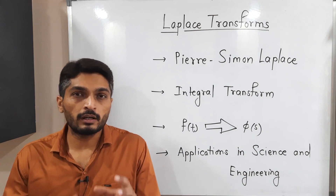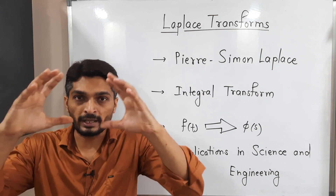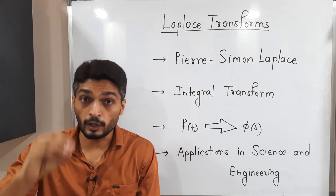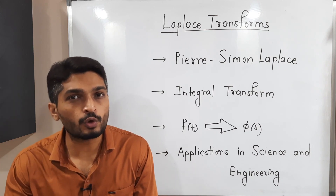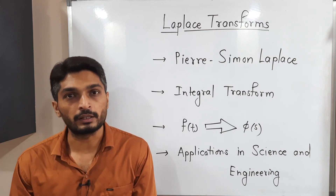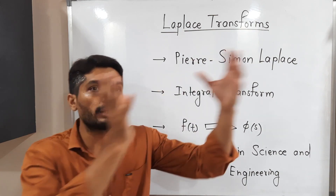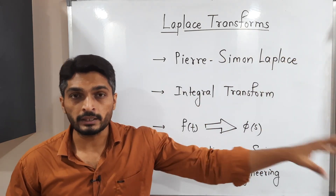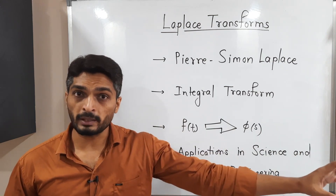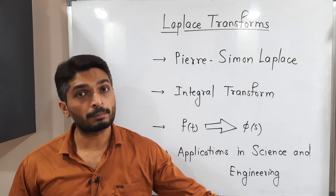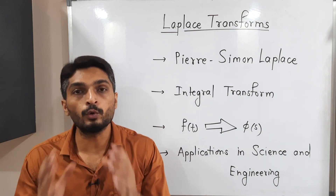In a transform, what we do exactly: suppose we have one domain and we have a problem or a function in that domain. If it is difficult to solve the problem in that particular domain, we apply the transform — we shift the problem into another domain where it is comparatively simple to solve. We solve the problem, get the answer, and again apply the inverse transform to get the solution back in the original domain.